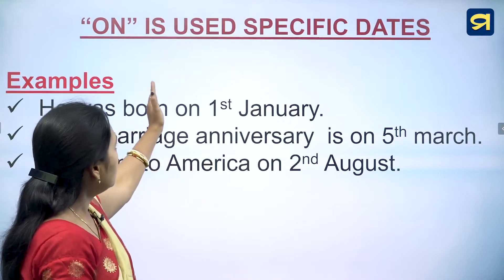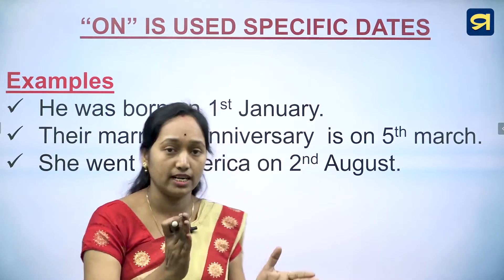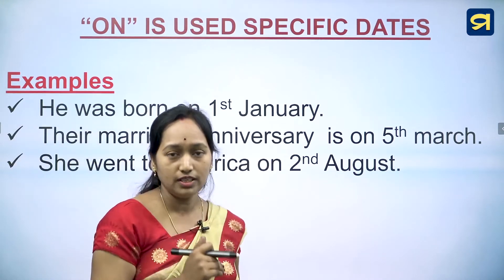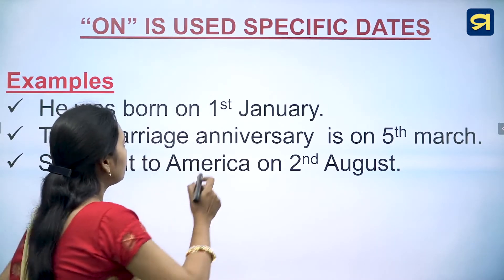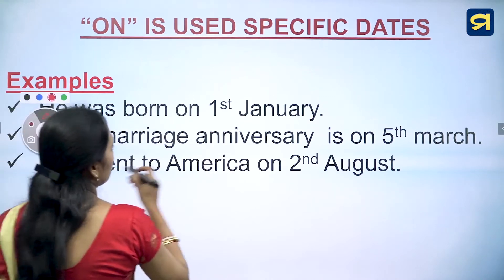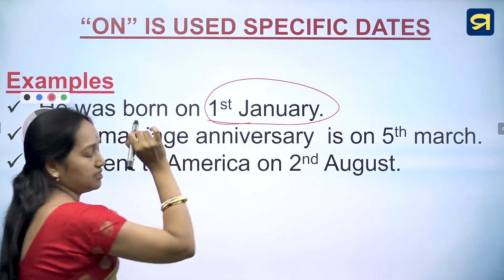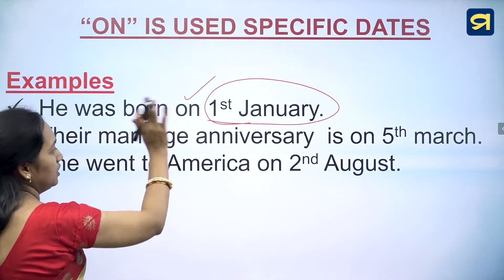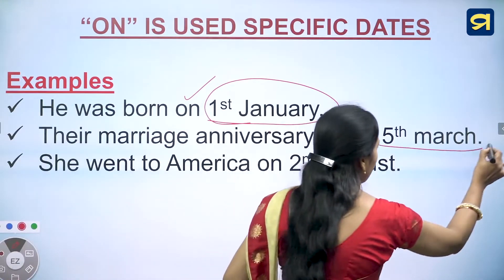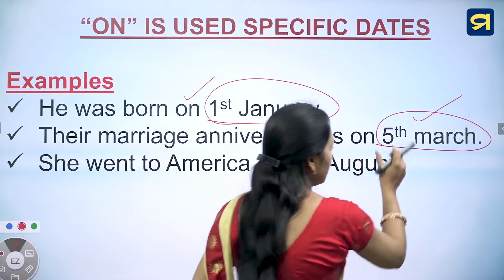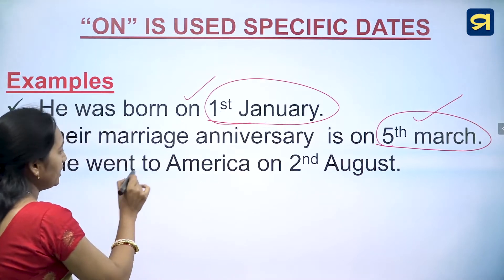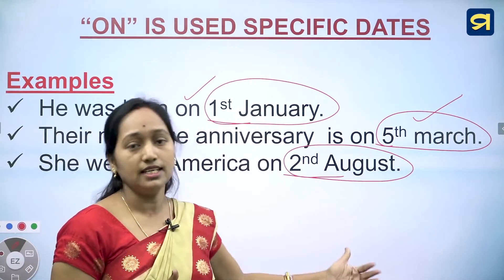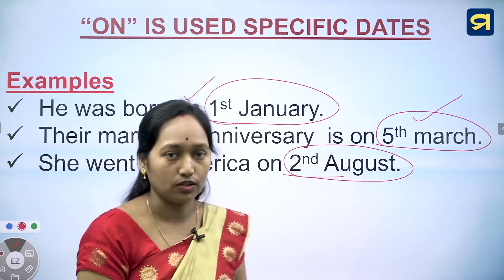'On' is also used for specific dates. For example: he was born on 1st January — this is a specific date, so we use 'on'. Their marriage anniversary is on 5th March, and she went to America on 2nd August. The preposition 'on' is used when referring to an exact date.